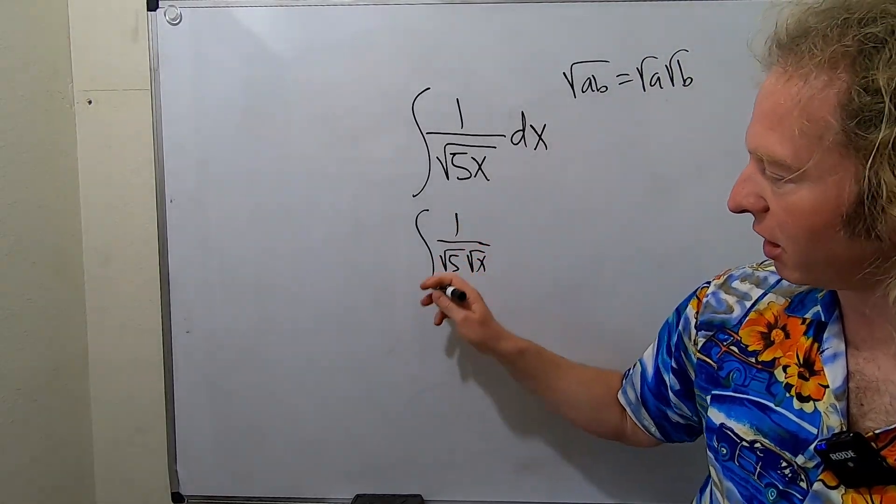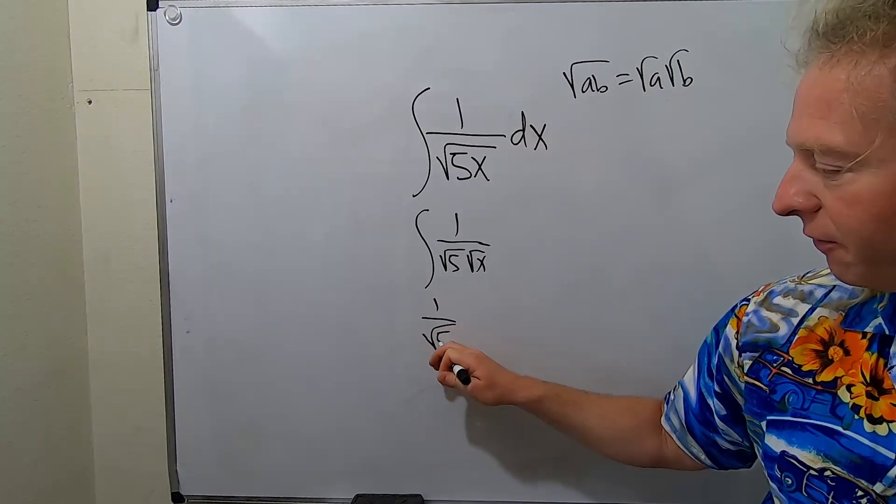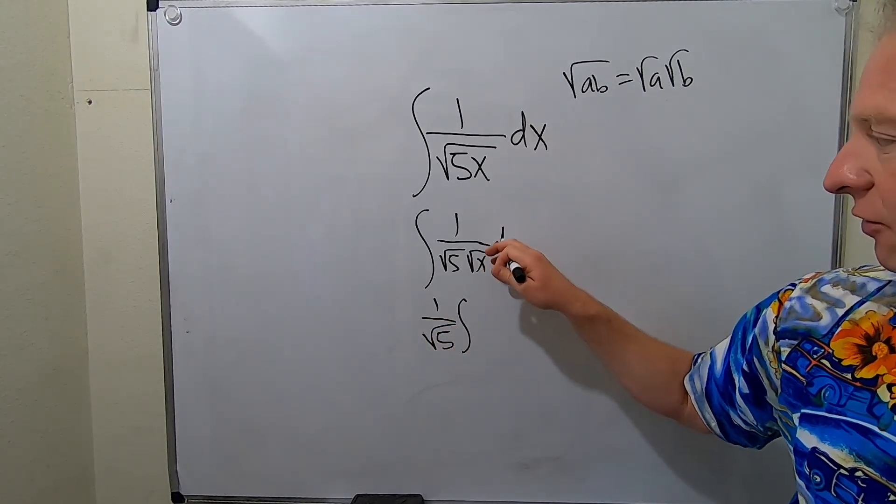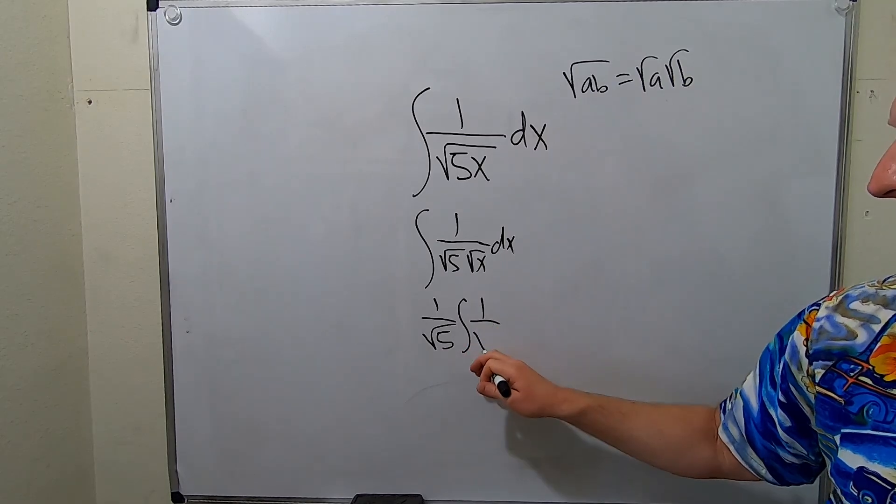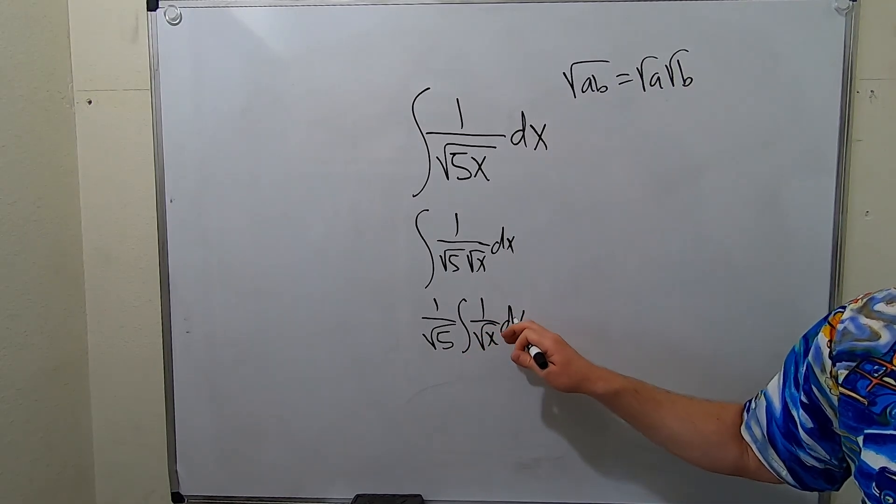Then you can write it like this. You can pull out the 1 over the square root of 5. And so you're left with this piece here, like this.